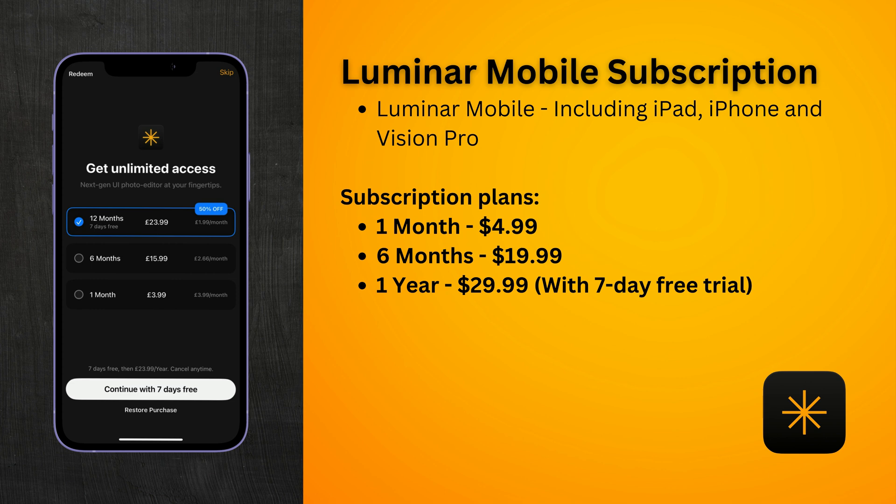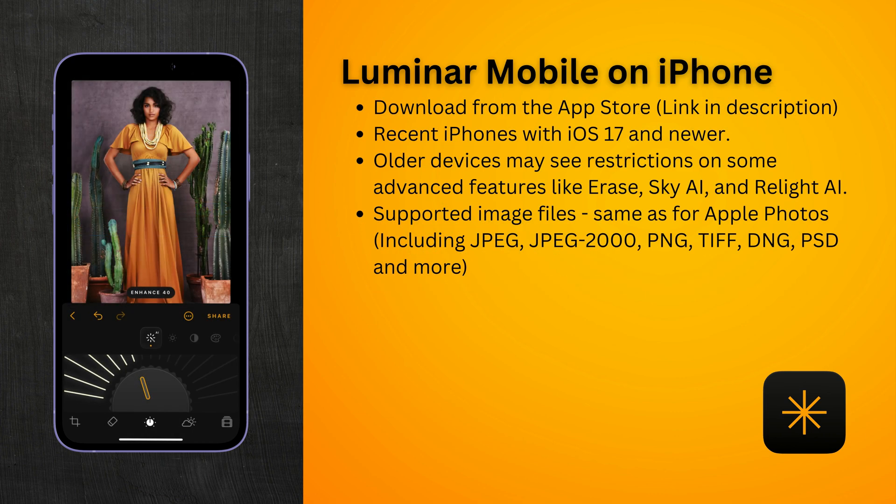There are three subscription plans available: a 1-month subscription, a 6-month subscription, and a 1-year annual subscription which comes with a 7-day free trial. To get Luminar Mobile on your iPhone, you can download it from the App Store using the link in the description of this video. You will need a device with iOS 17 or newer. Some older devices may work, but you may see restrictions on advanced features like Erase, Sky AI, and Relight AI.